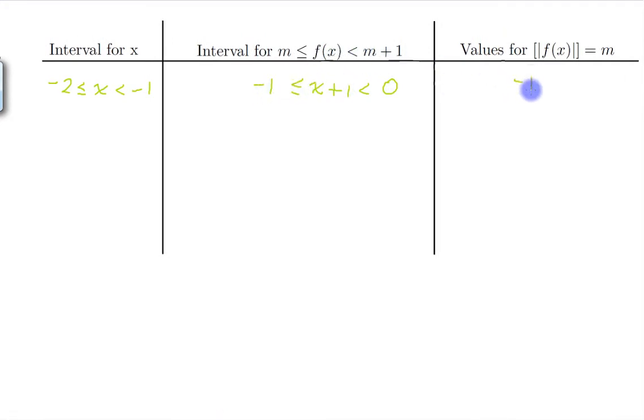Now let's go to the next one. Here I need 0 less than or equal to x plus 1 less than 1, and for this interval that's going to happen in minus 1 less than or equal to x less than 0, and the value is 0.